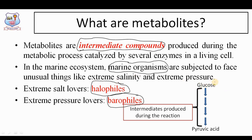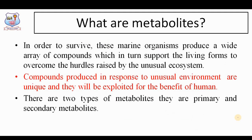In this diagram, you can understand what metabolites are. This is a brief illustration of the EMP pathway. The reaction starts with glucose and ends with pyruvic acid. Between glucose and pyruvic acid, there are many compounds produced. Those intermediate compounds are called metabolites. You may expect this question in exams — what are metabolites? You are supposed to write: metabolites are intermediate compounds produced during metabolic reactions.